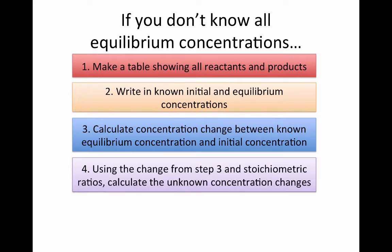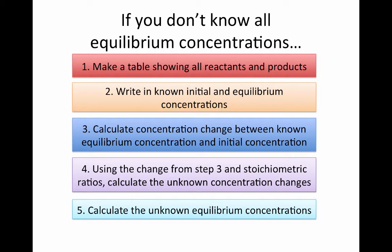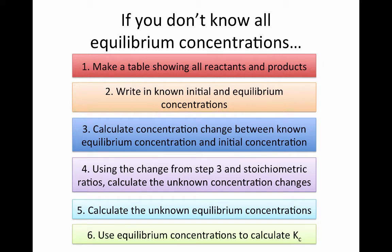Once we know that change for one species, we can then calculate the other concentration changes using stoichiometric ratios. We take those concentration changes and use them to calculate the unknown equilibrium concentrations. Then, once we have all of our equilibrium concentrations, we can plug them into our expression for the equilibrium constant and use that to calculate the value.